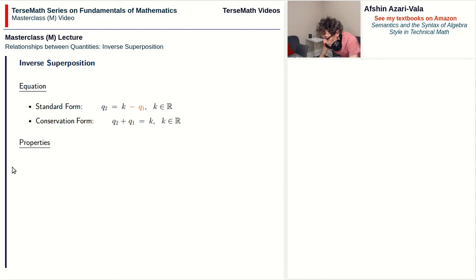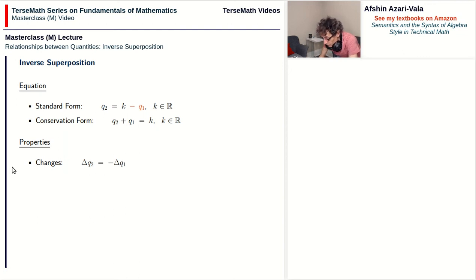Some properties of inverse superposition. As far as changes go, the change in the value of one quantity is equal to the negative of the change in the value of the other quantity. So if q2 goes up by 2, q1 goes down by 2.